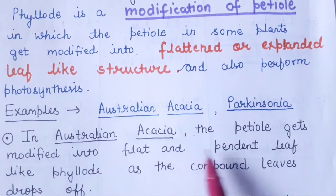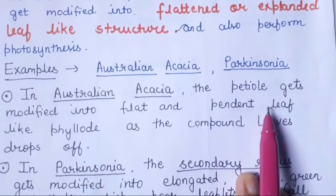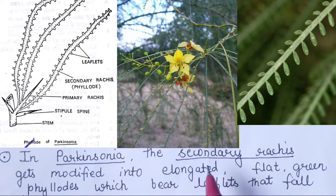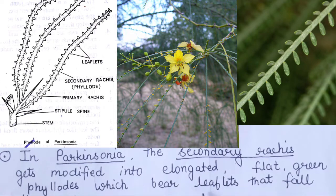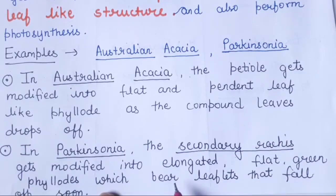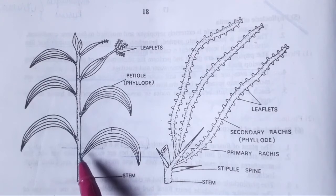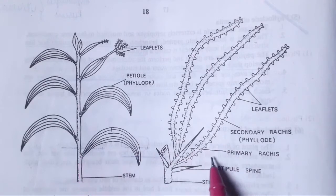Our next example is Parkinsonia. In the case of Parkinsonia, the secondary rachis gets modified into an elongated flat green phyllode that bears leaflets which fall off soon. This is the phyllode of Australian Acacia and this is the phyllode of Parkinsonia.